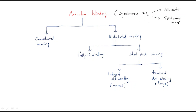For the synchronous machine, the armature winding is nothing but the stator winding. In order to understand armature winding, first we have to discuss the different types. There are two types of armature winding: one is concentrated winding and another one is distributed winding.